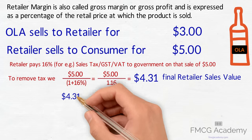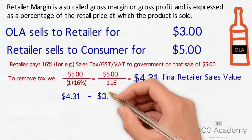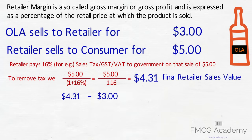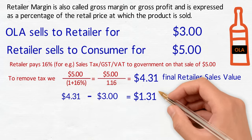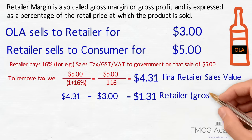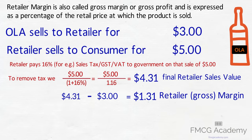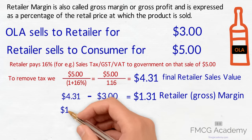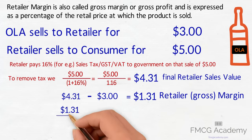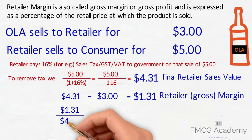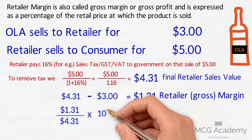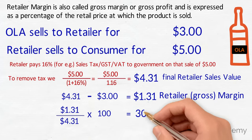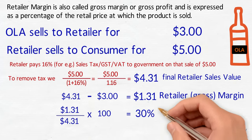From this we subtract three dollars, which is the retailer's cost, to get one dollar and 31 cents, which is also called the gross margin. We express this margin as a percentage of retailer sales by dividing one dollar 31 by four dollars and 31 cents and multiplying by 100 to give us 30 percent retailer margin.